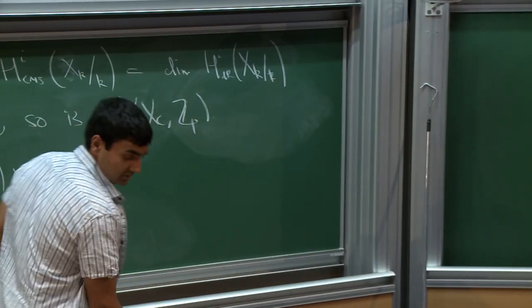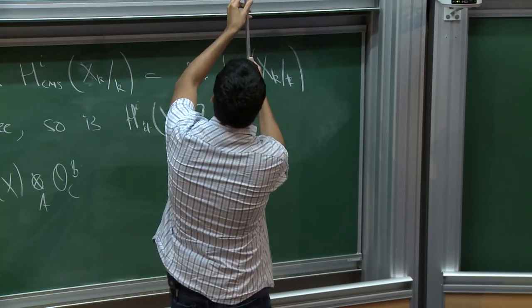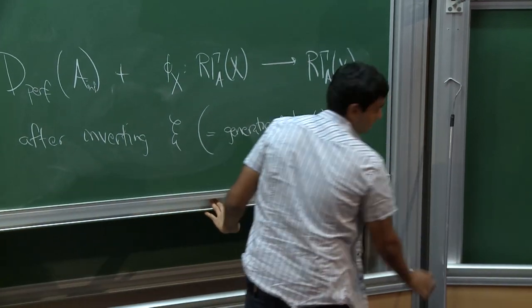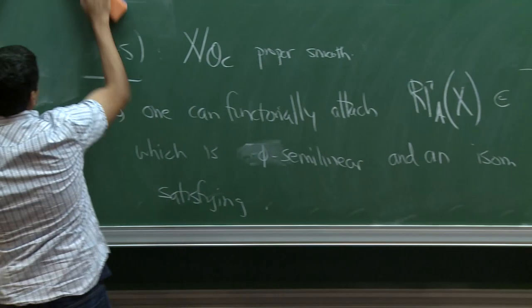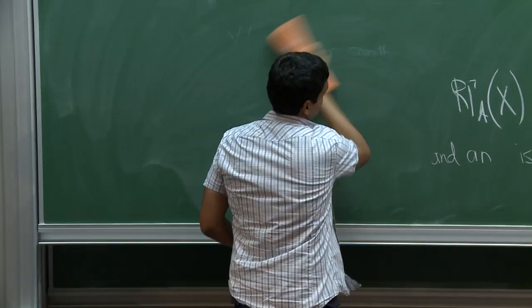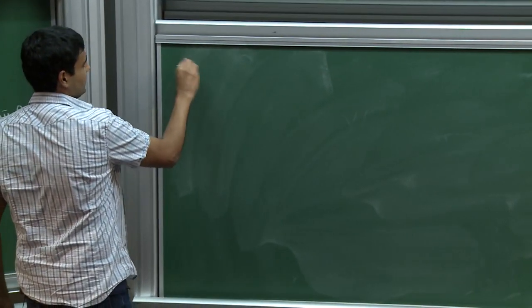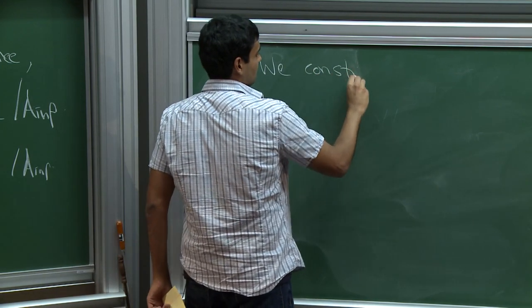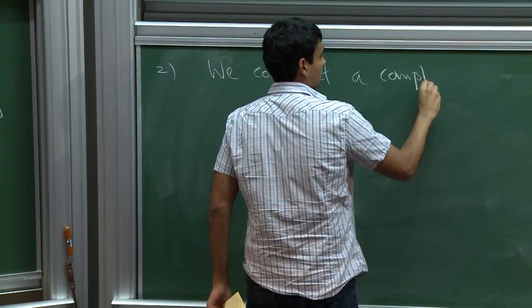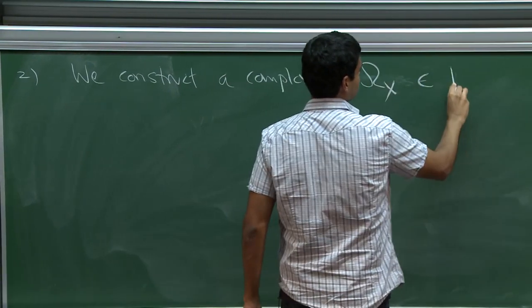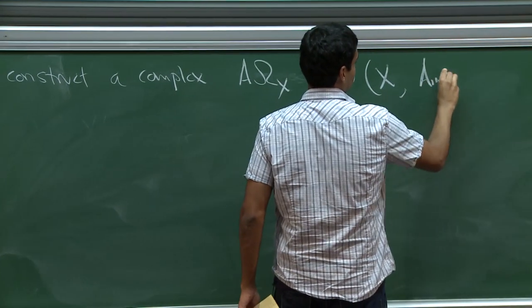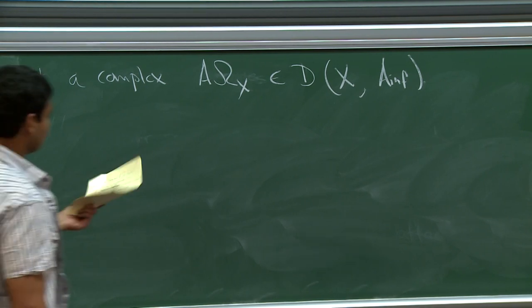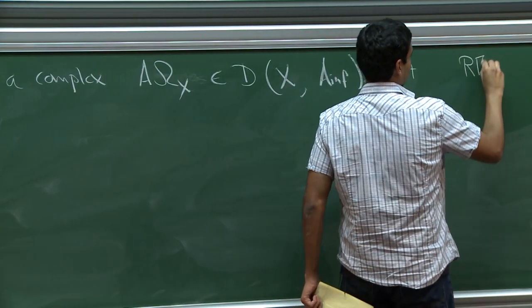Some remarks about the theorem. First remark: when the crystalline cohomology is torsion-free in the setting of the second corollary, you can say something finer. If H^i is torsion-free, then H^i of this complex over A_inf is itself a finite free module — so you have a finite free module over A_inf together with a self-map phi which is an isomorphism after inverting xi. These gadgets have a name: Fargues called them Breuil-Kisin modules. He proved a very interesting theorem: if you have a Breuil-Kisin module, then the crystalline specialization is determined by the other information.